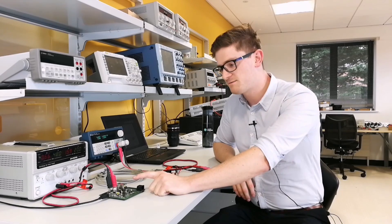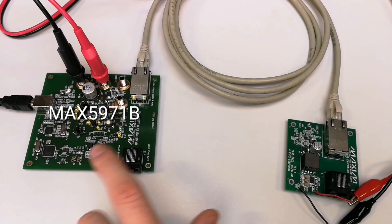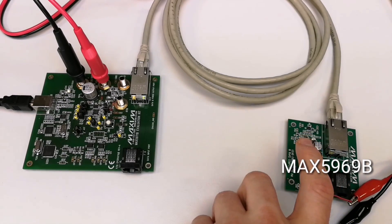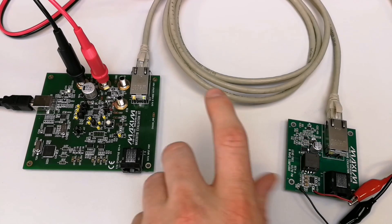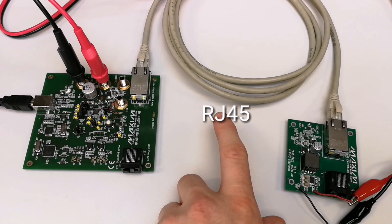Here we have the MAX 5971B which will act as our power sourcing equipment, and the MAX 5969B as the powered device which will receive power over an RJ45 Cat6 cable.